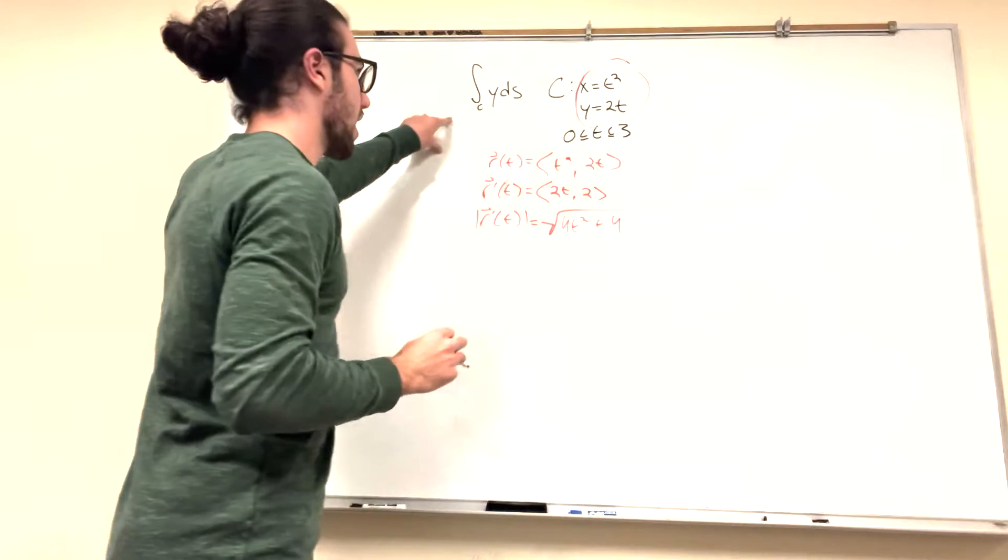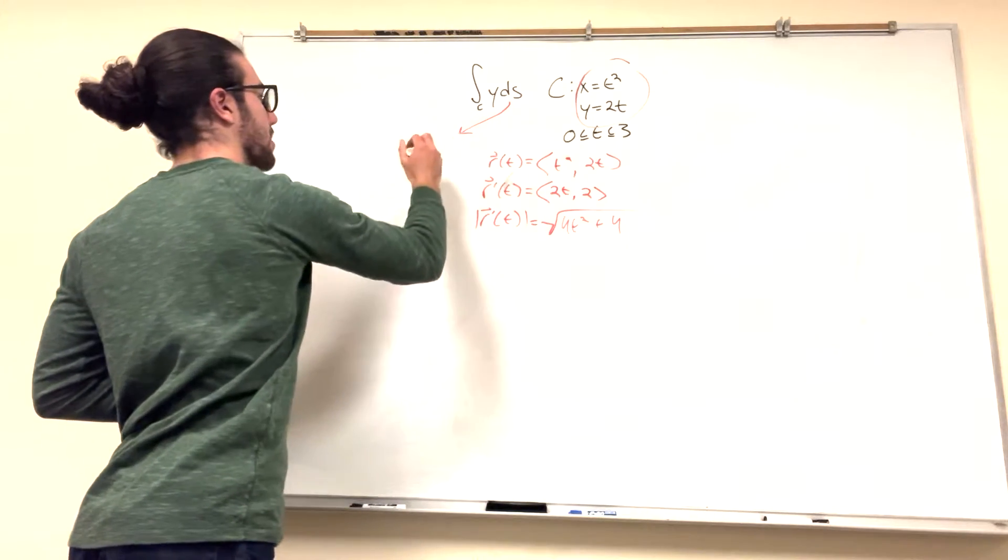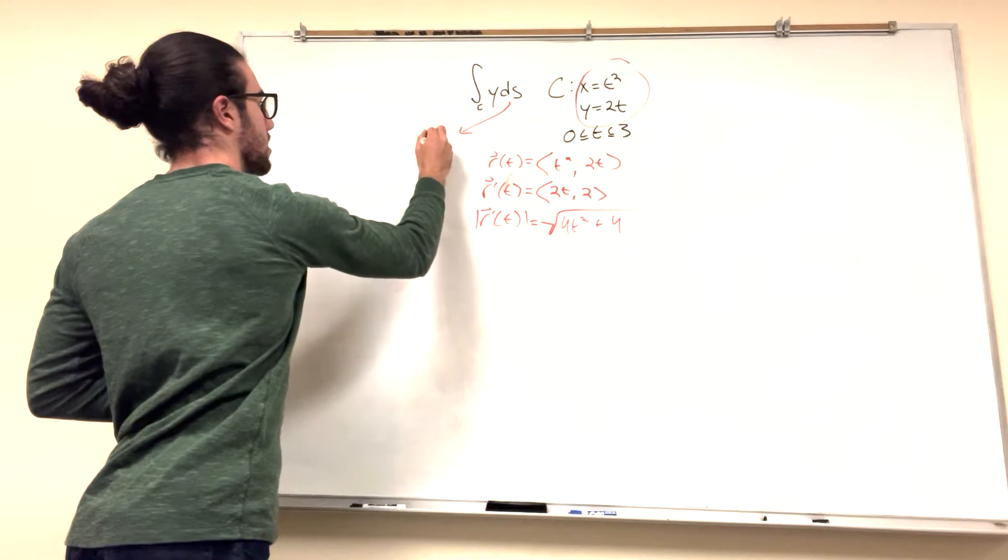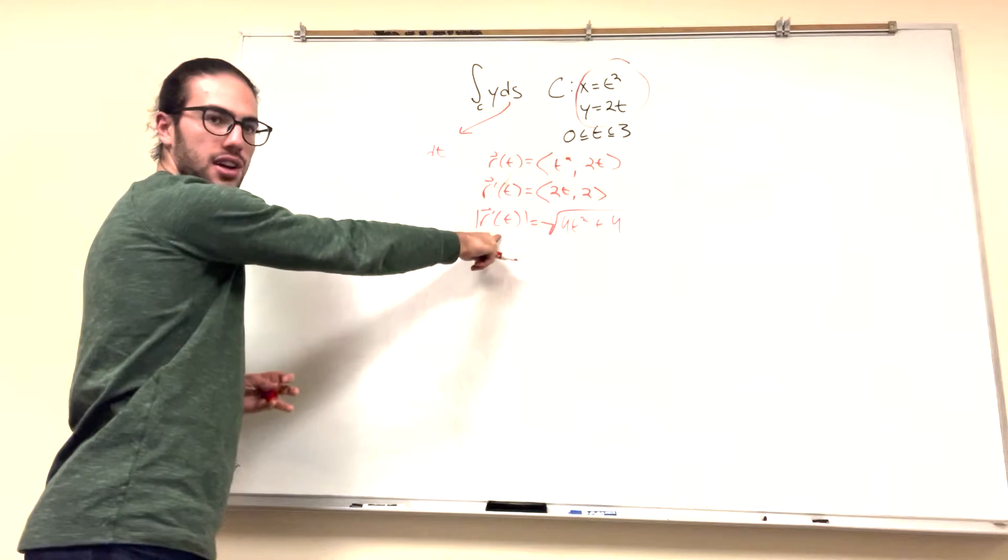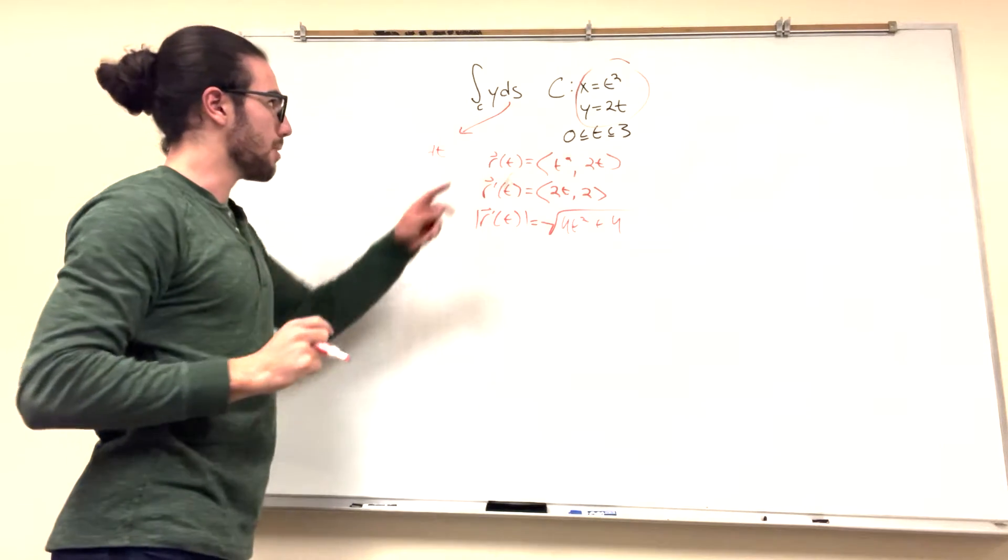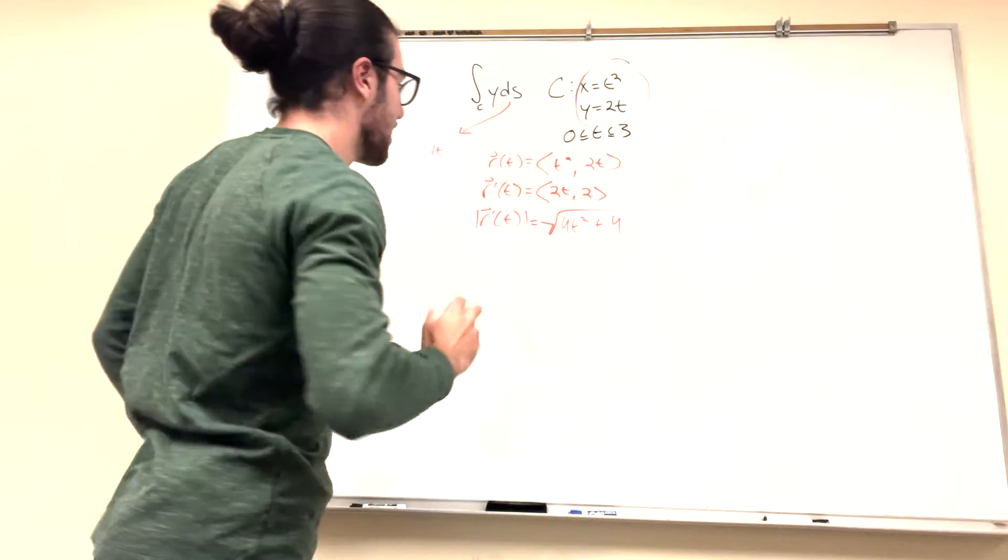So now when we reparameterize we put things in terms of t and then ds becomes magnitude r prime of t dt. So we have this here. This is what we found and we can just turn it into dt. Now we need y in terms of t but y in terms of t is just 2t because we're just given this from the start. So it's perfect.